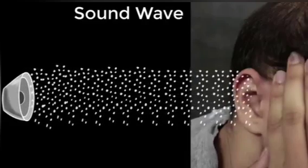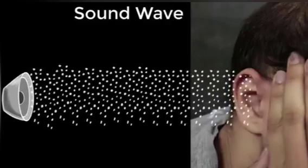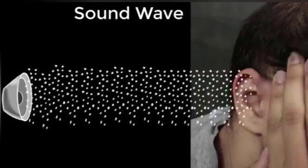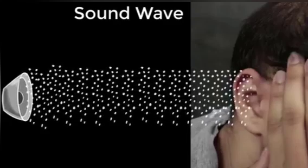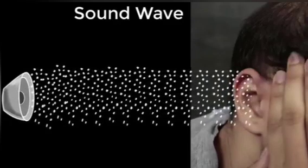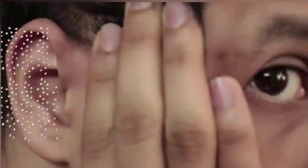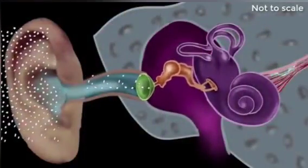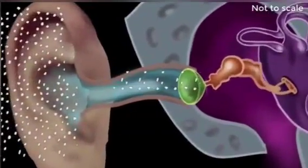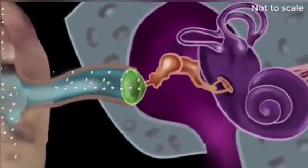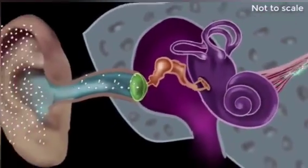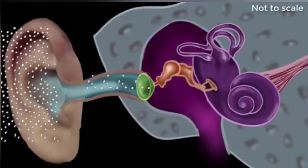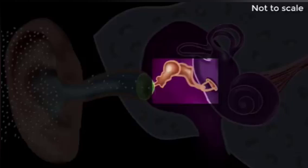But how does something as boring as air molecules going back and forth make us experience something like this? For that, we need to look at our ear carefully — the entire structure of the ear. Our ear can be divided into three parts: the outer ear, the middle ear, and the inner ear.